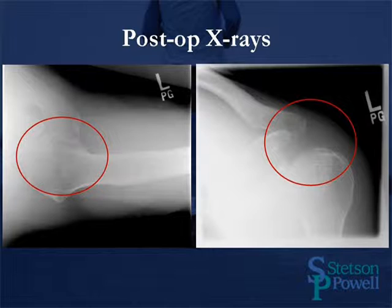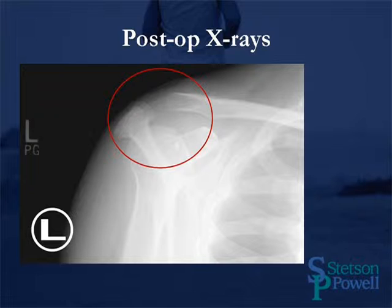Here you see the postoperative x-rays. On the left, you see the axillary view — we've had adequate resection of that mesoacromial fragment and it's no longer visible. The AP view again confirms we've excised that entire mesoacromial fragment. The supraspinatus outlet view also shows that we've excised that entire mesoacromial fragment.